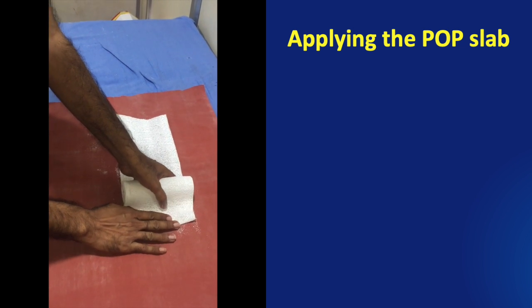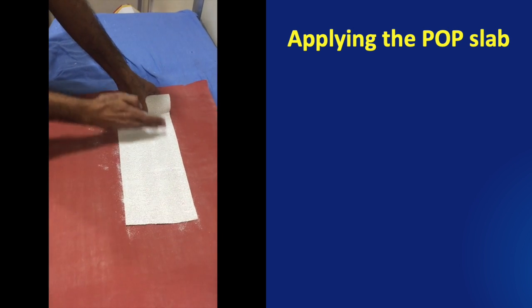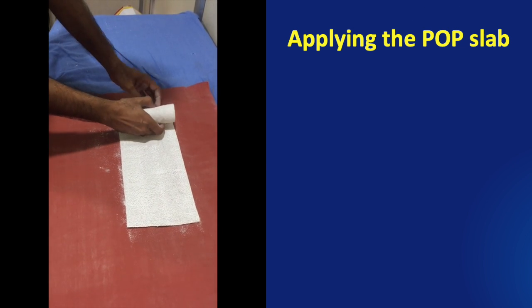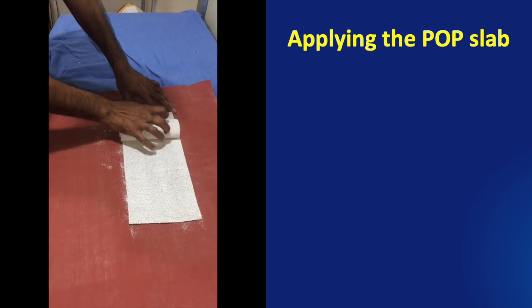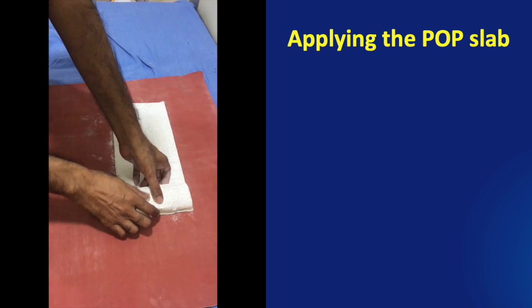We now pile up the layers of POP one by one over each other for the required length and the required number of layers. Usually we use about 14 to 16 layers.